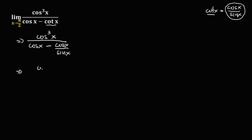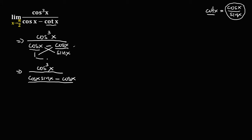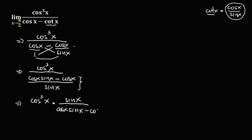Now simplify. We have cosine to the power 3x over the denominator. To simplify this denominator, we use cross multiplication. Writing cosine x over 1, using cross multiplication gives us cosine x times sine x, then minus 1 times cosine x, over 1 times sine x. So the denominator becomes cosine x times sine x minus cosine x.